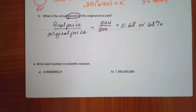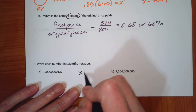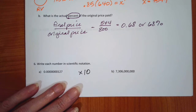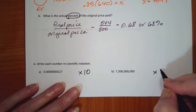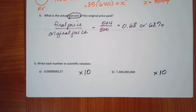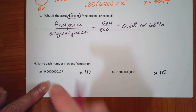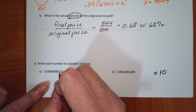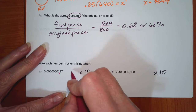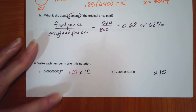The only thing I know about scientific notation is that it's going to be some number times 10 to some power. I can only have one digit to the left of the decimal, so the decimal needs to be right here — it's going to be 1.27 times something.